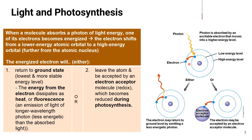As the electron becomes energized, it moves to a high energy orbital. At this state the electron is said to be excited. Normally, this energized electron will return to the ground state — the lowest and most stable energy level — as shown in this figure.